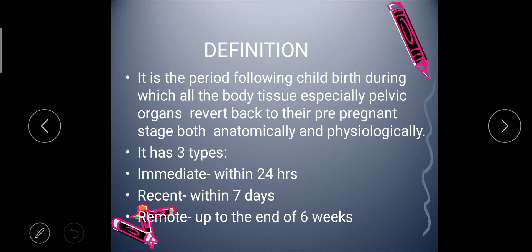Puerperium has three types: immediate, recent, and remote. The duration of puerperium is divided into three categories. Immediate is the first 24 hours; recent is considered the first seven days; and remote is considered up to the end of six weeks. So from the time of delivery till six weeks of duration, we call it the postnatal period or puerperium.